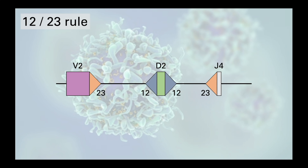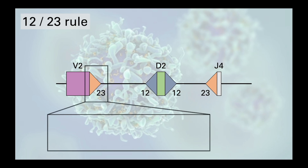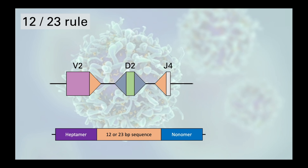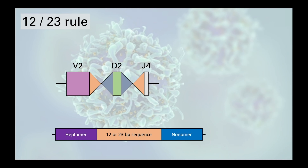Sandwiched between a conserved heptamer and nonamer there is a variable region that contains either 12 or 23 base pairs. The 12-23 rule means that only a 12 base pair RSS can bind to a 23 base pair RSS. So the only possible combination is for V to align next to D, which has to align next to J.